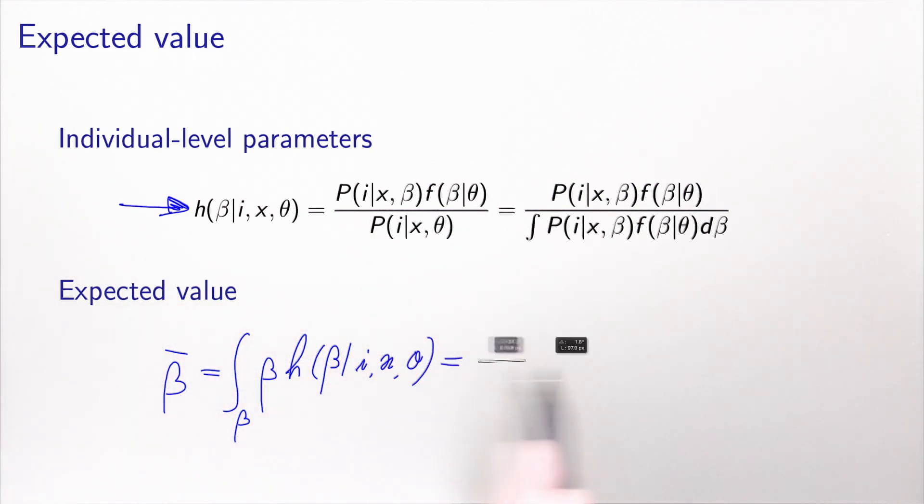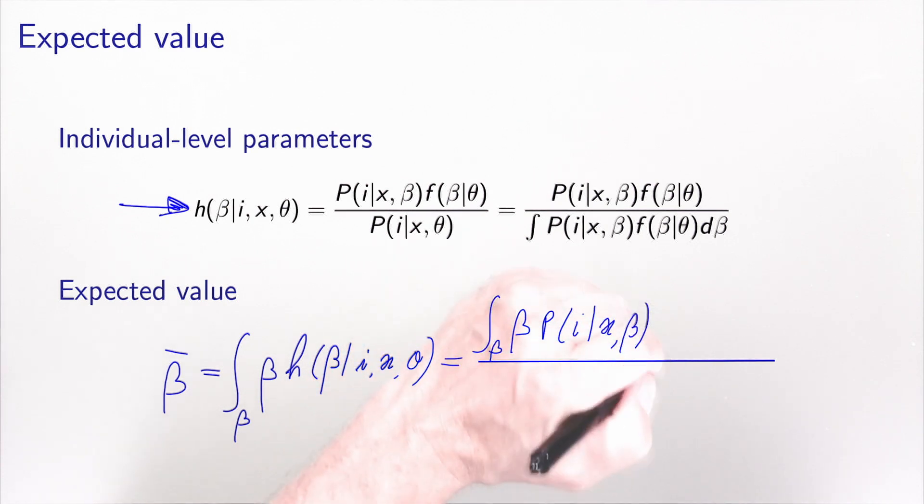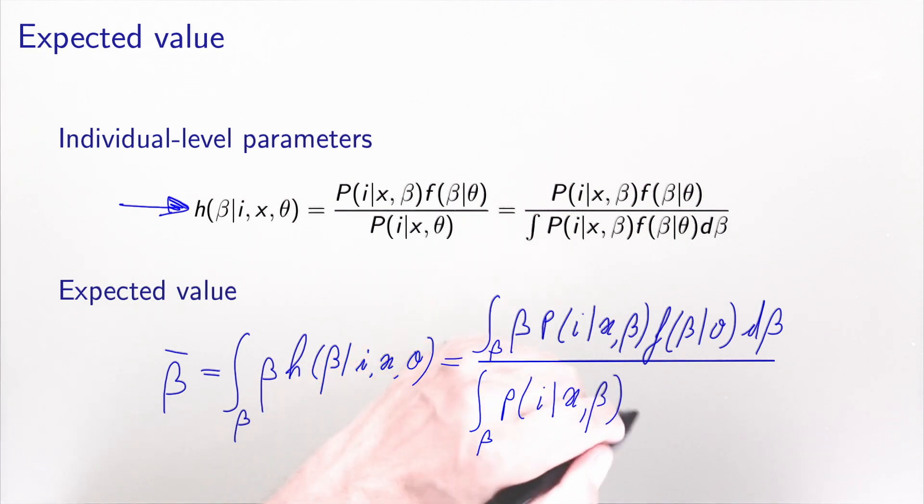And so what is it? Well, this is the integral over beta of beta, p(i|x,beta), f(beta|theta), d beta, divided by the integral over beta of p(i|x,beta), f(beta|theta), d beta.